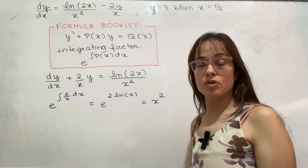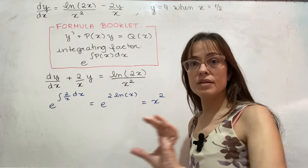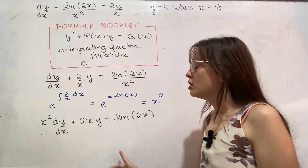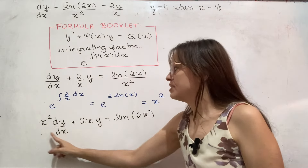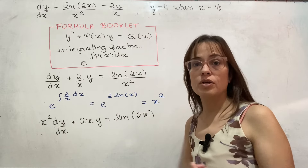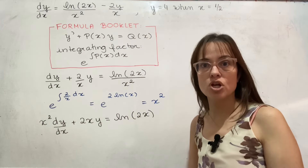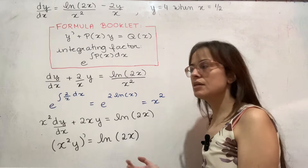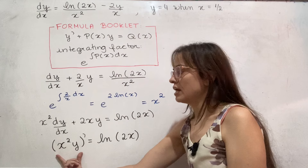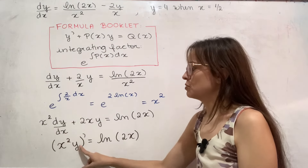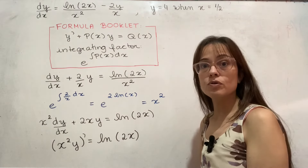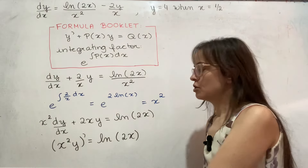Now, what do I do with the integrating factor? The idea is to multiply the whole equation by it. Then you want to treat the left side as the result of the product rule applied to some multiplication. You can see that the left side is the result of the product rule applied to x squared times y — it's x squared times the derivative of y plus the derivative of x squared times y. Now you just integrate both sides.